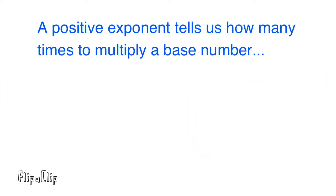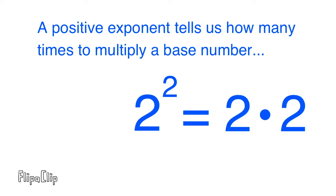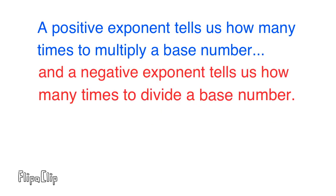A positive exponent tells us how many times to multiply a base number. In this case both the base number and the exponent is a two. The base number is the larger two and the exponent is the smaller two located in the upper right-hand corner. Since this exponent is a positive two, it tells us how many times to multiply the base number. Two to the power of positive two is equal to two times two, which is four.